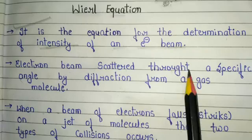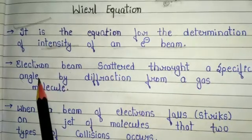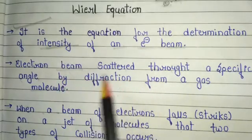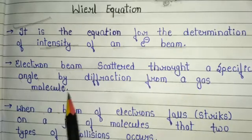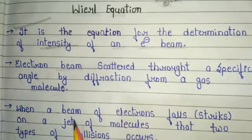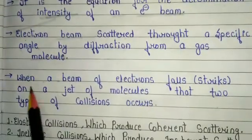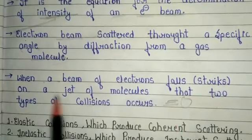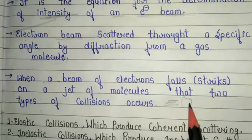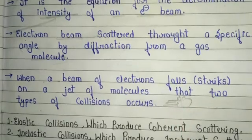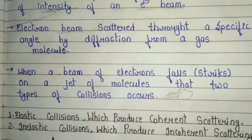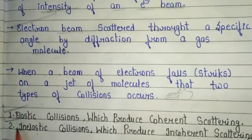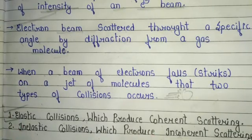The second important point: an electron beam is scattered through a specific angle by diffraction from a gas molecule. Third important point: when a beam of electrons falls or strikes on a jet of molecules, two types of collisions occur — first is elastic collision which produces coherent scattering, and second is inelastic collision which produces incoherent scattering.